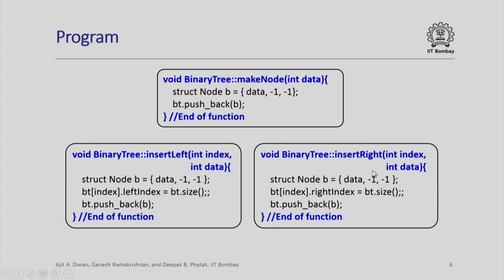Exactly similarly, if I have to insert at the right, I still have that node b as this, but now I set right index of the bt index as bt dot size and I simply say bt dot push back. So this node gets pushed as the right child of the parent.